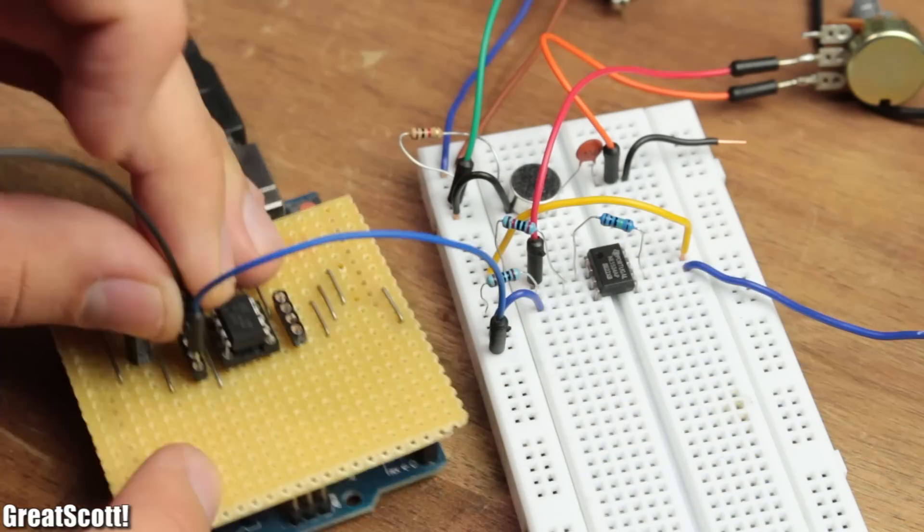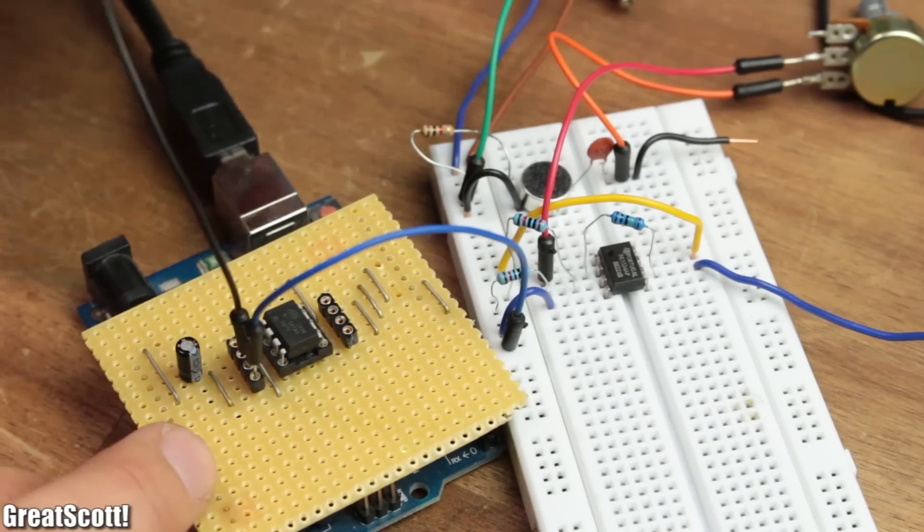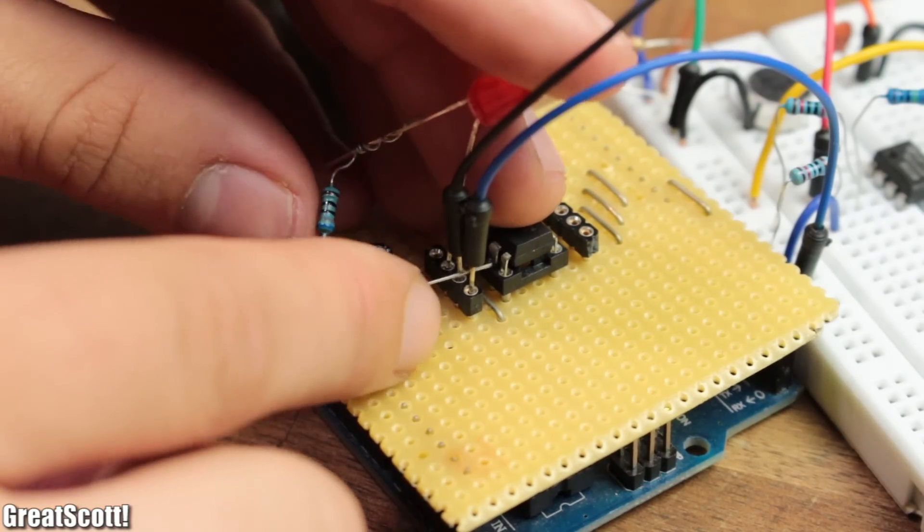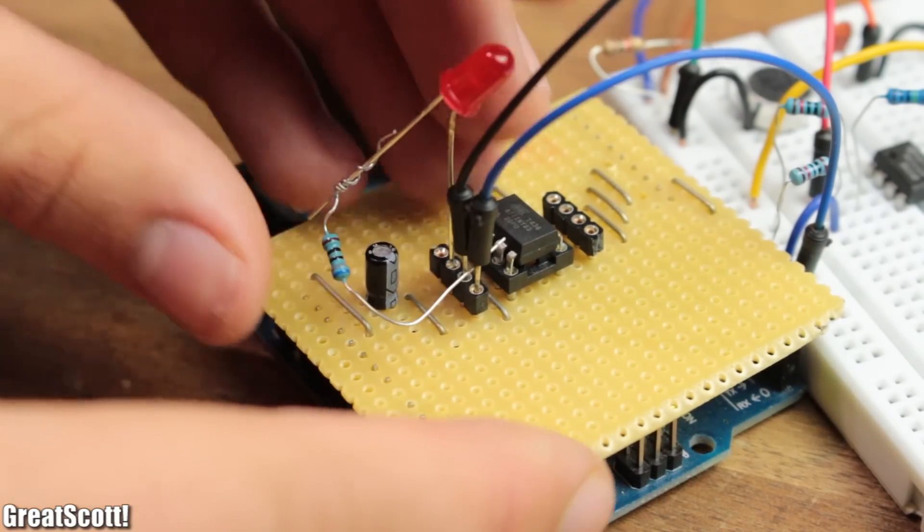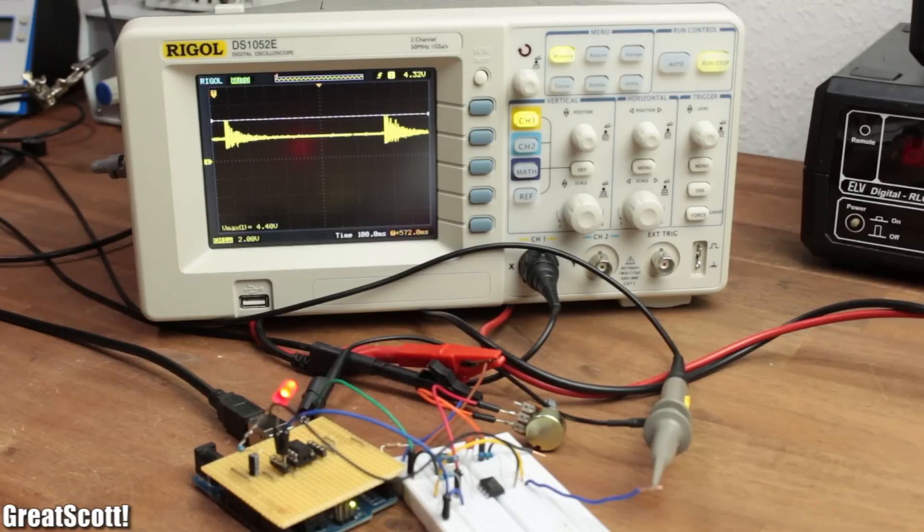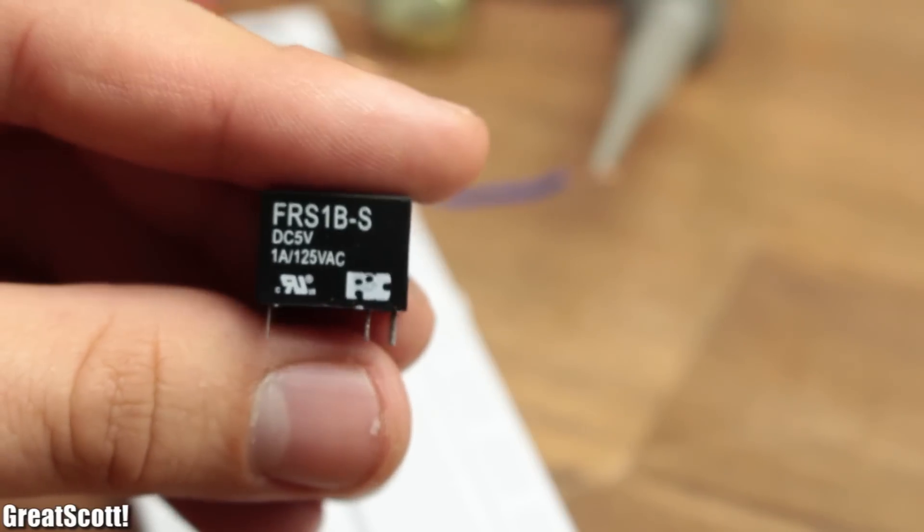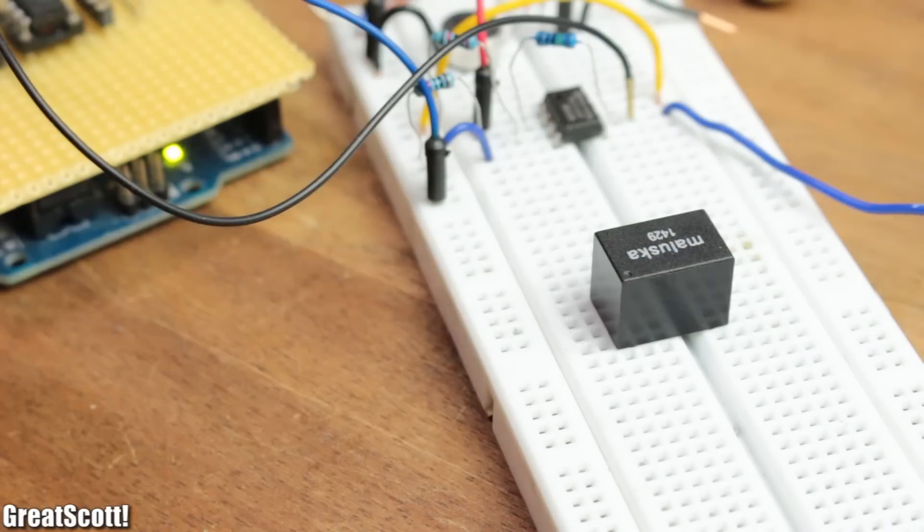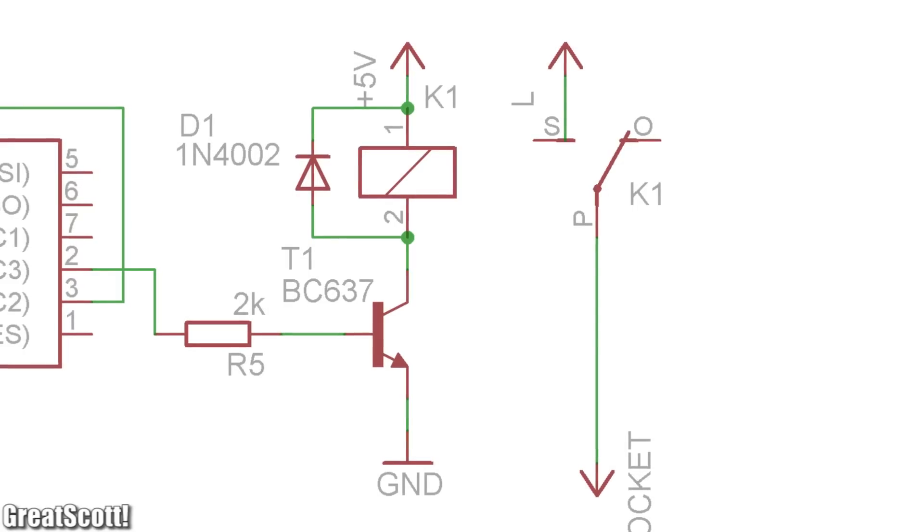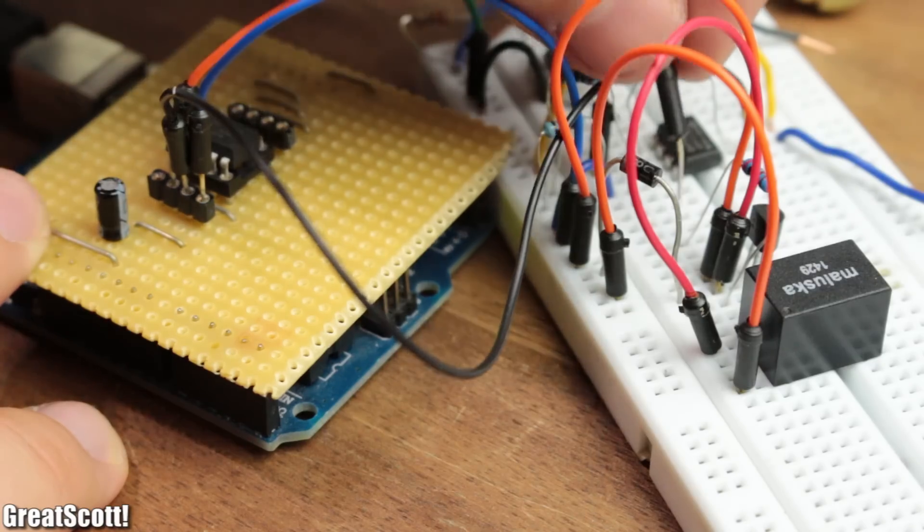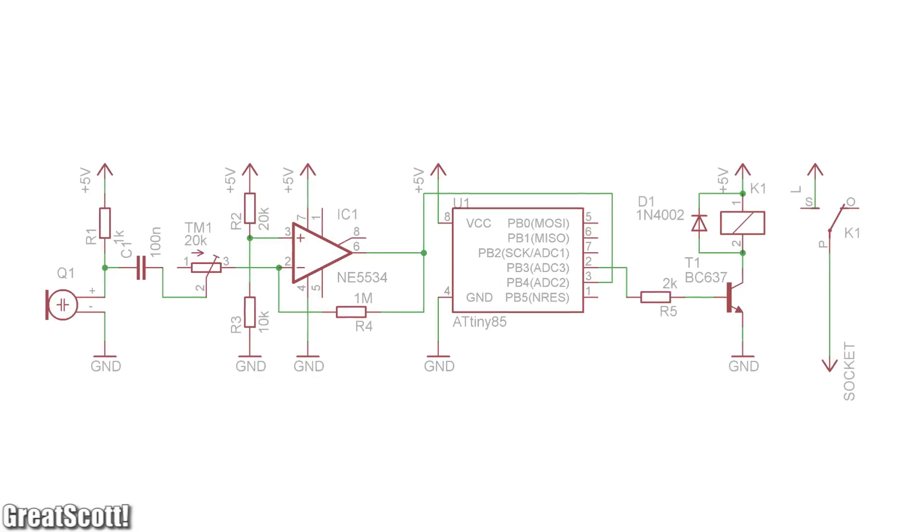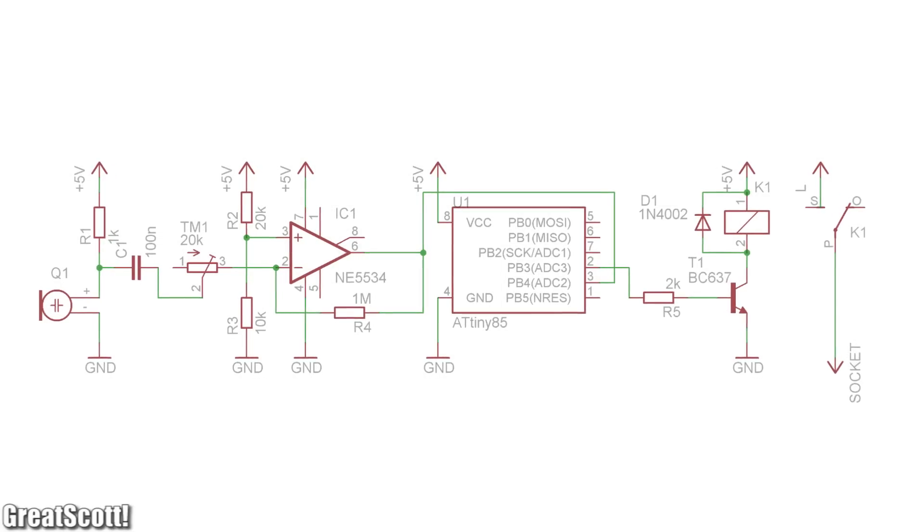Now before building anything permanently, it is always a good idea to test the circuit by using an LED with resistor on the output pin of the ATtiny. Once I was sure it worked with the LED, I tried the same setup with a 5V relay, which will later allow us to switch on and off all kinds of AC appliances. In combination with a flyback diode and a NPN transistor as a switch, it worked like a charm.